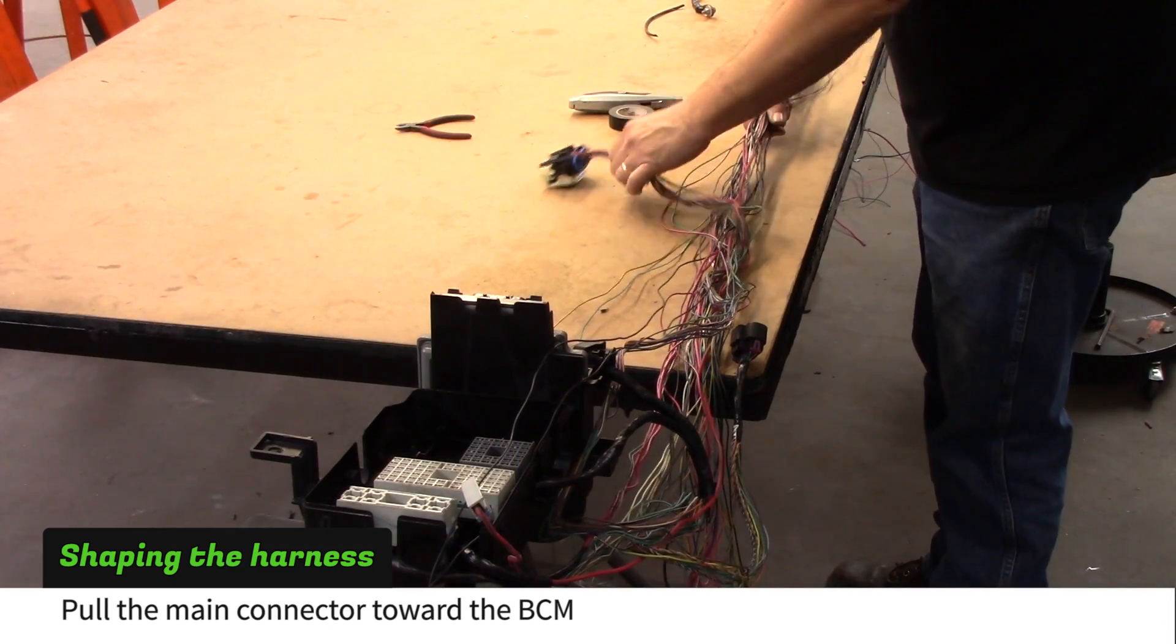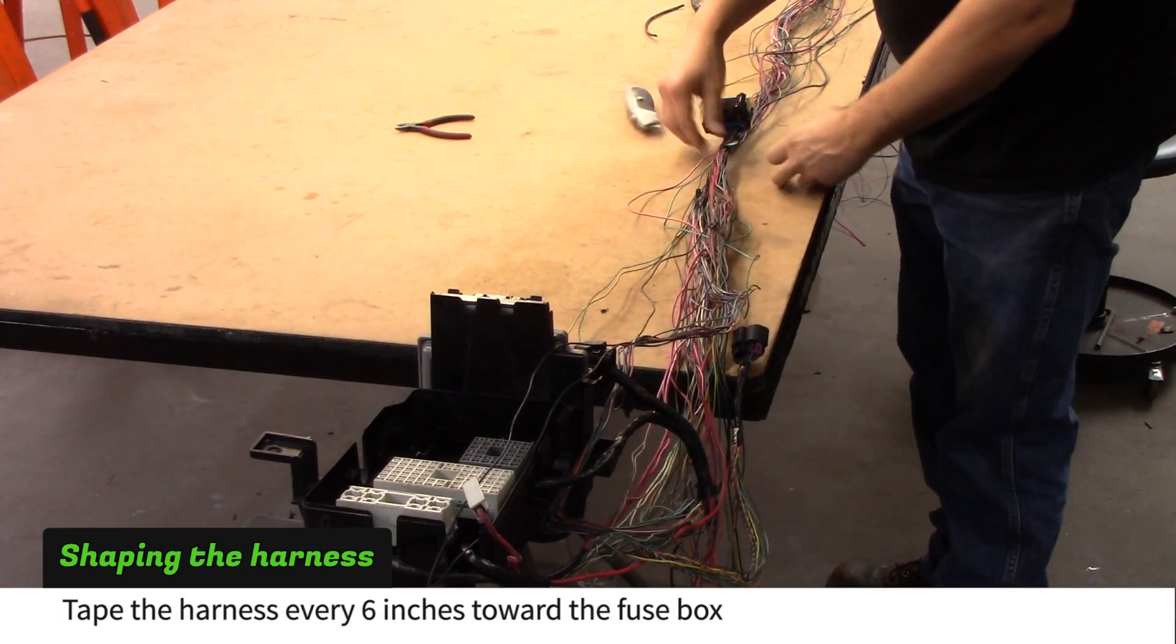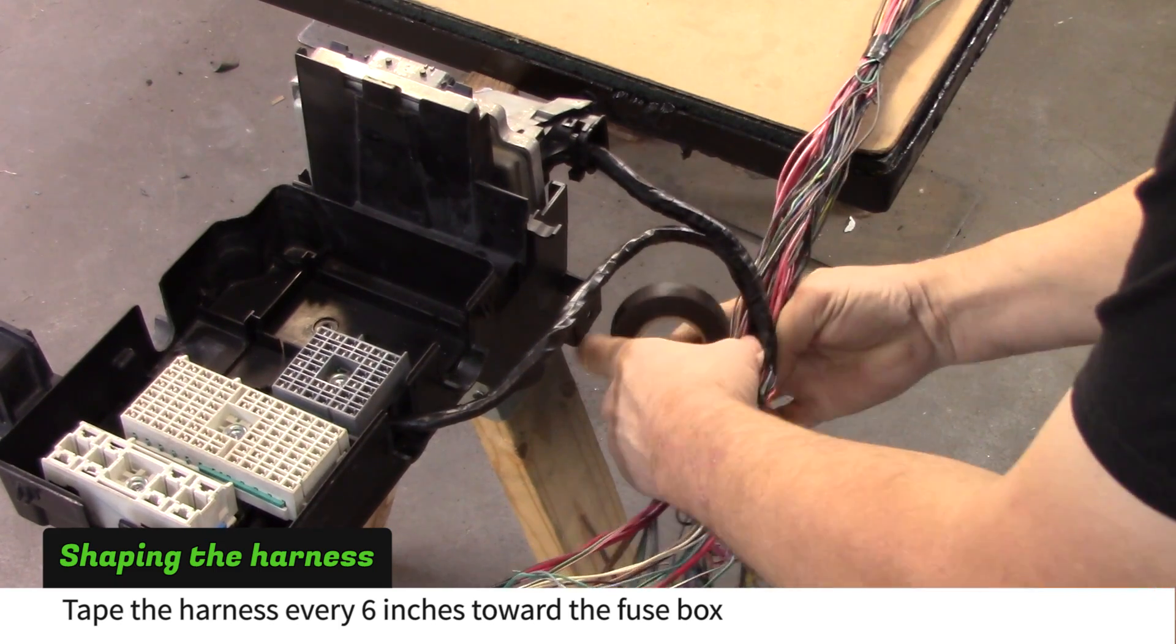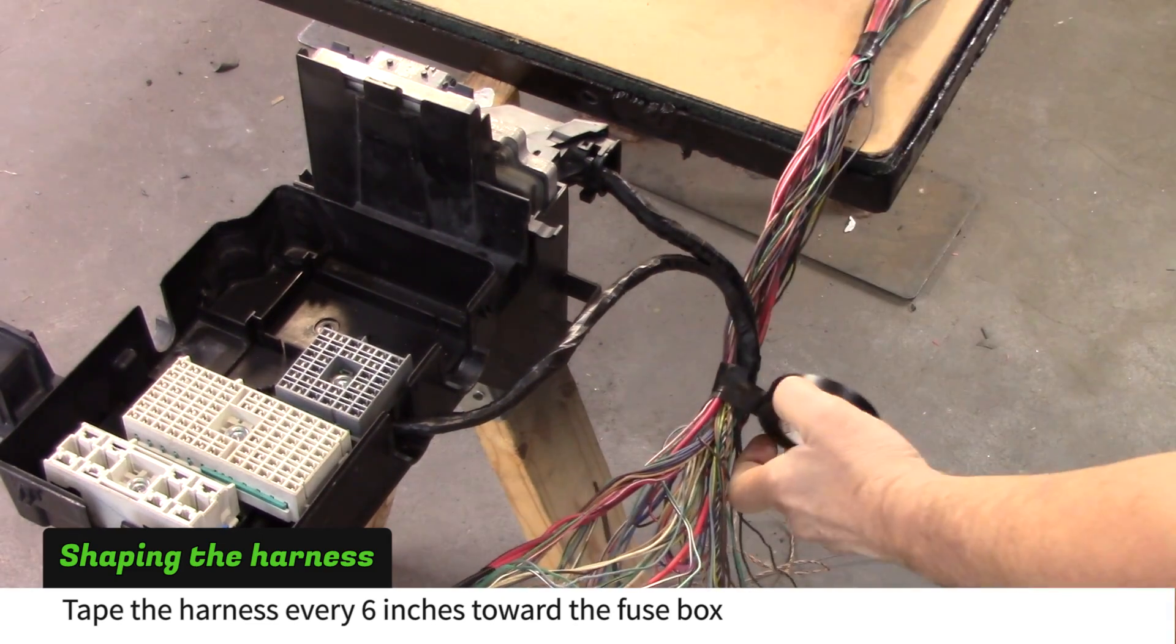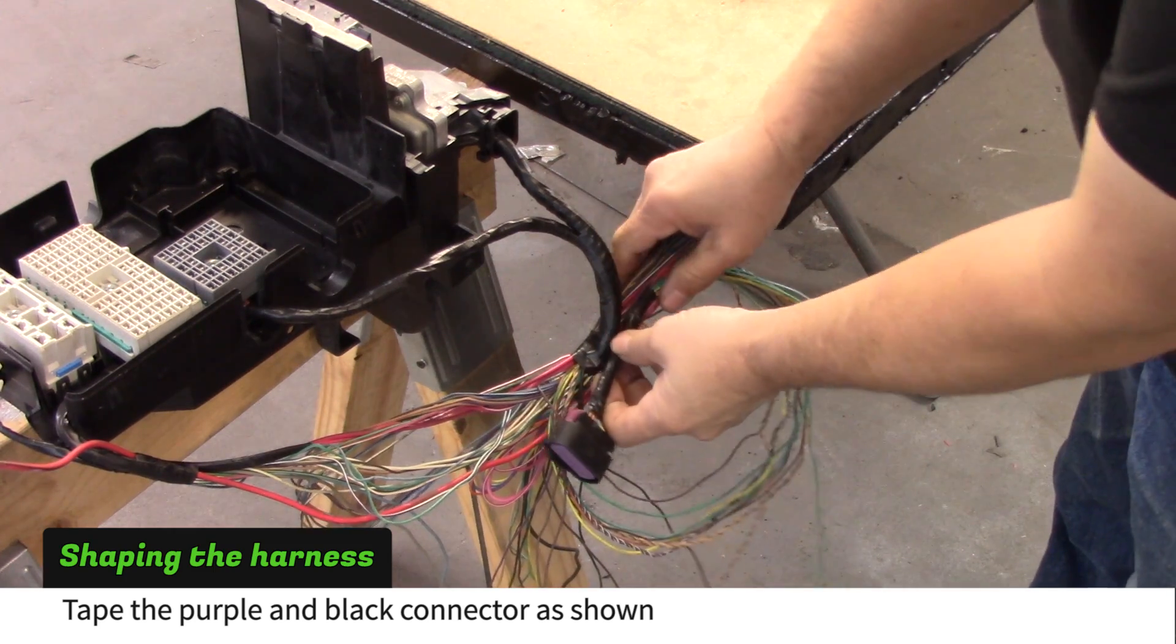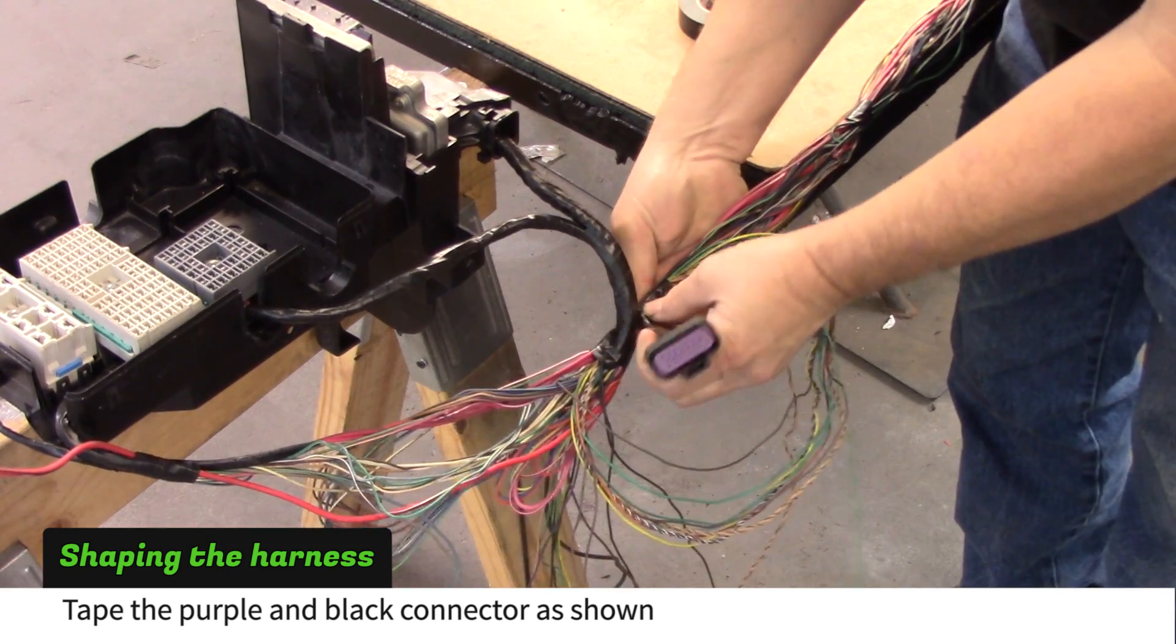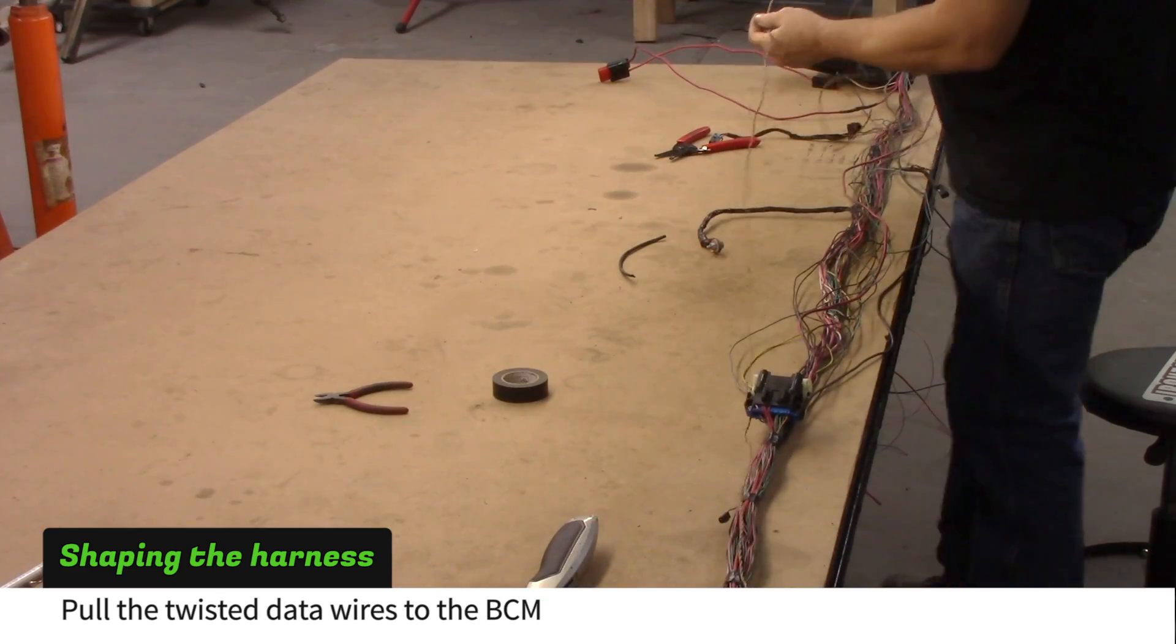Pull the main connector toward the BCM and tape near the plug to hold it in place. Tape about every 6 inches to keep this section of wire organized. Tape the purple and black connector as shown. Leave about 3 inches of wire hanging out. Pull the twisted data wires to the BCM.